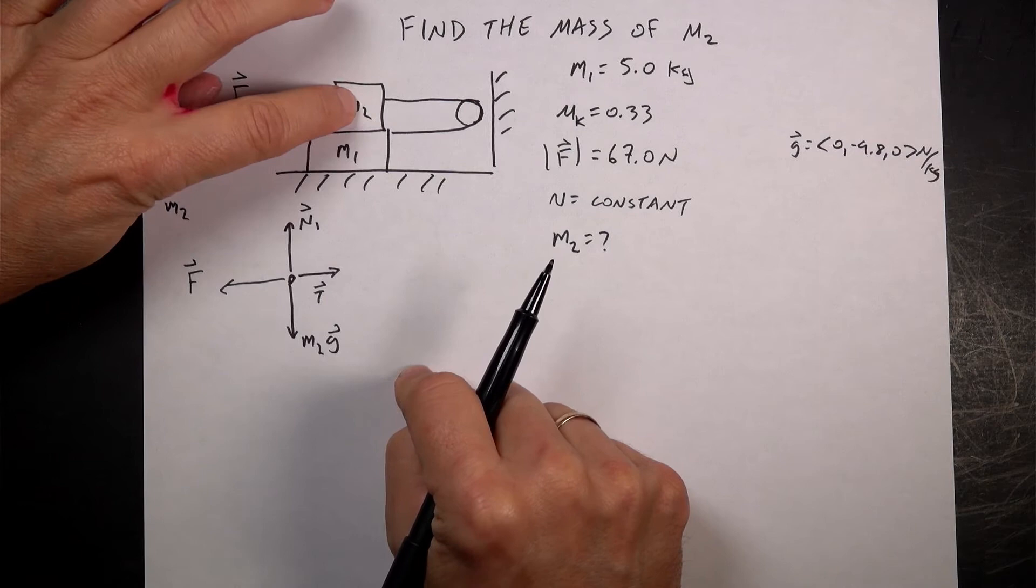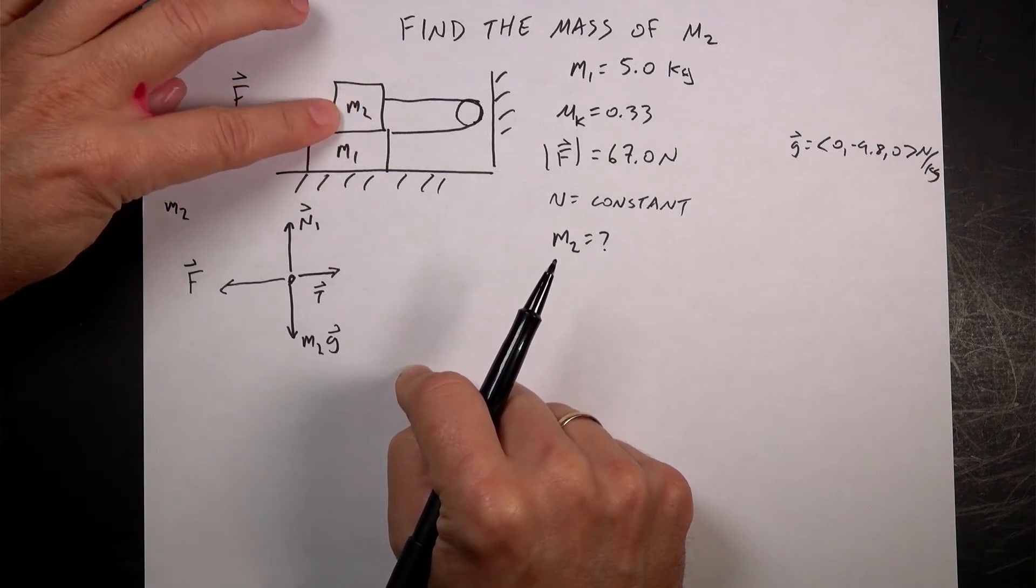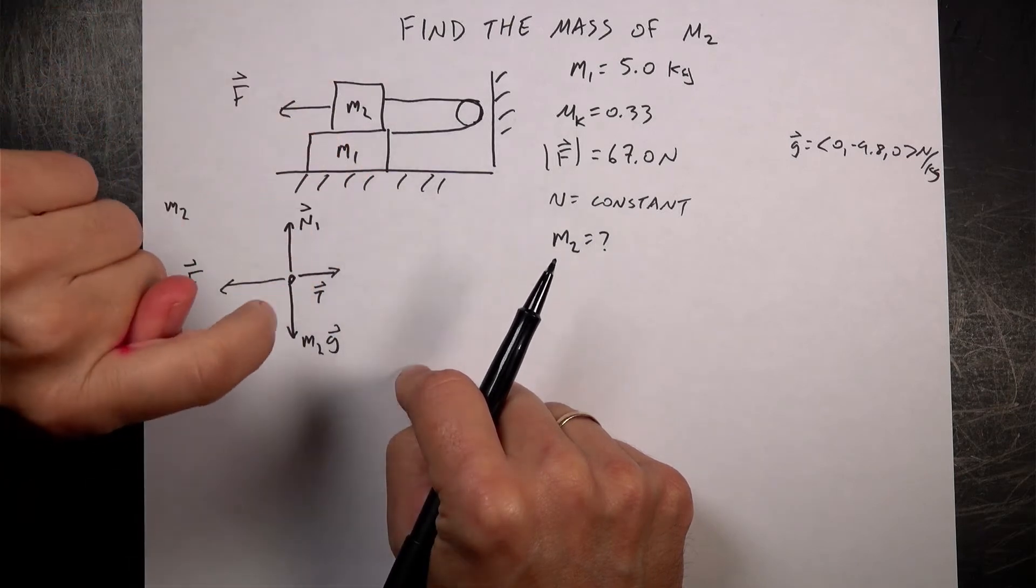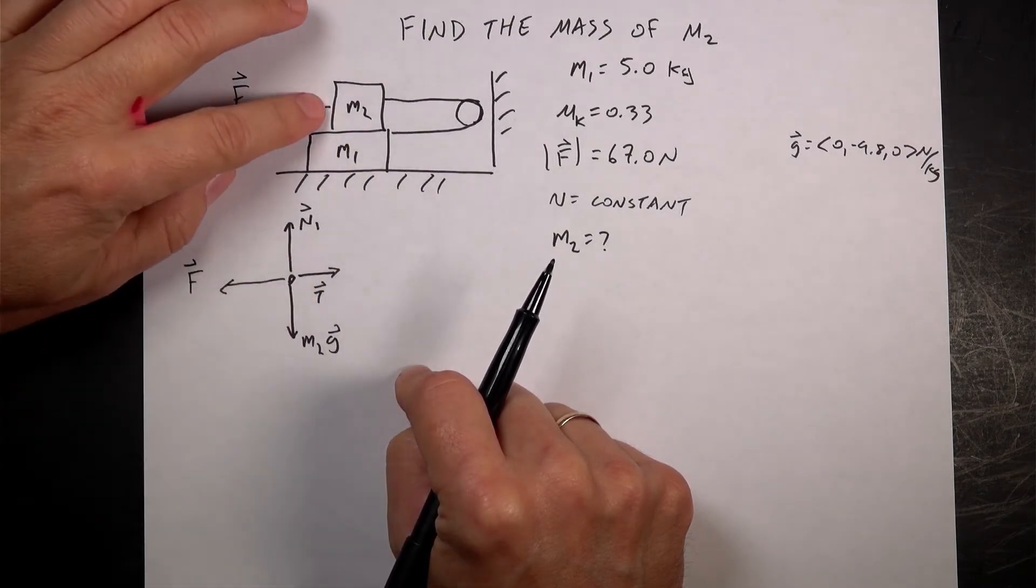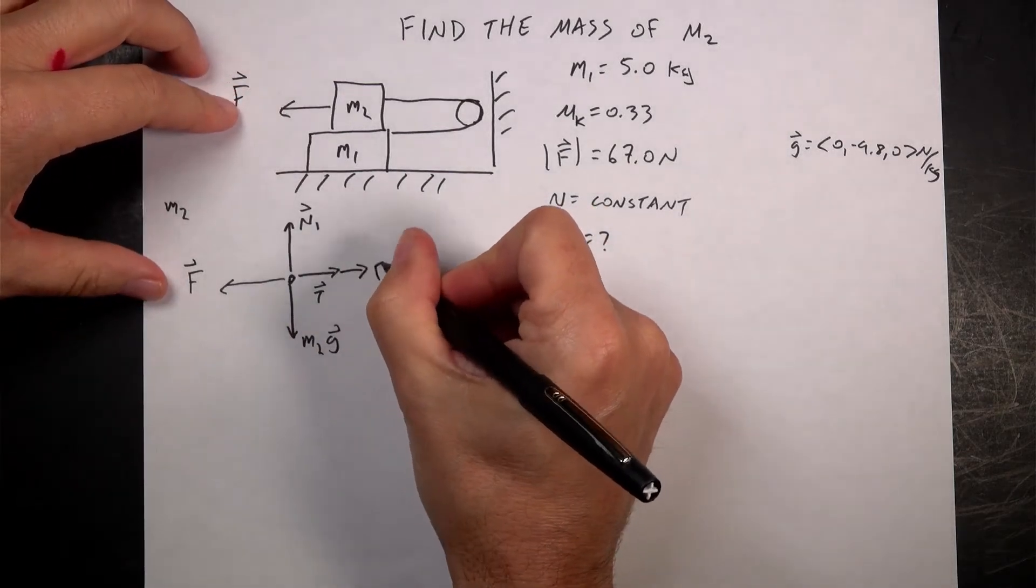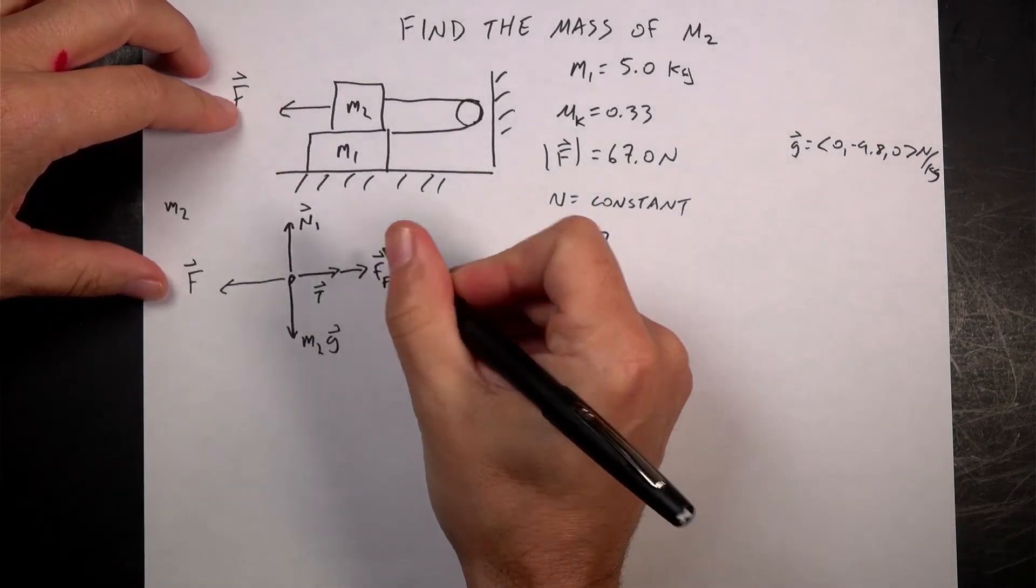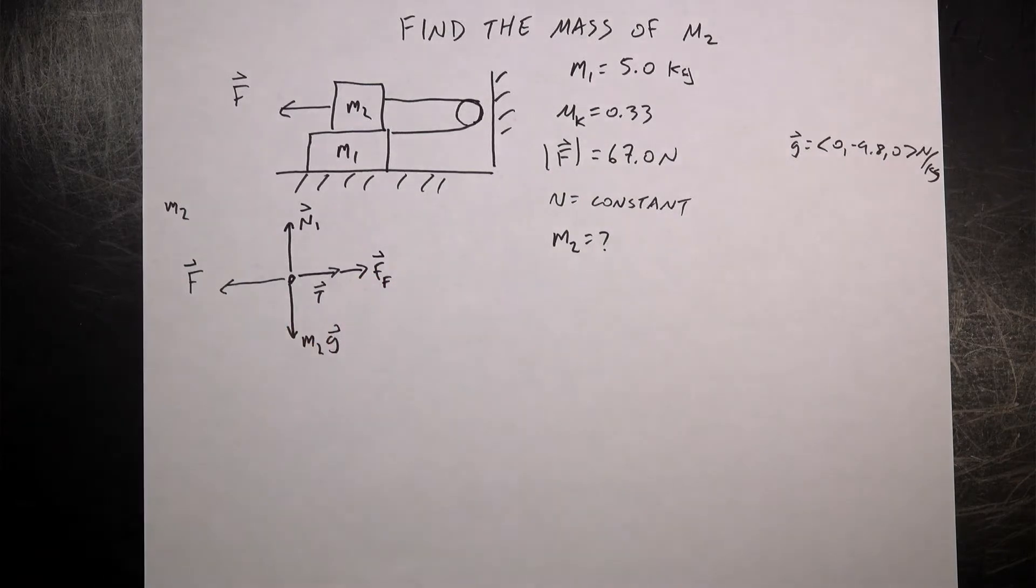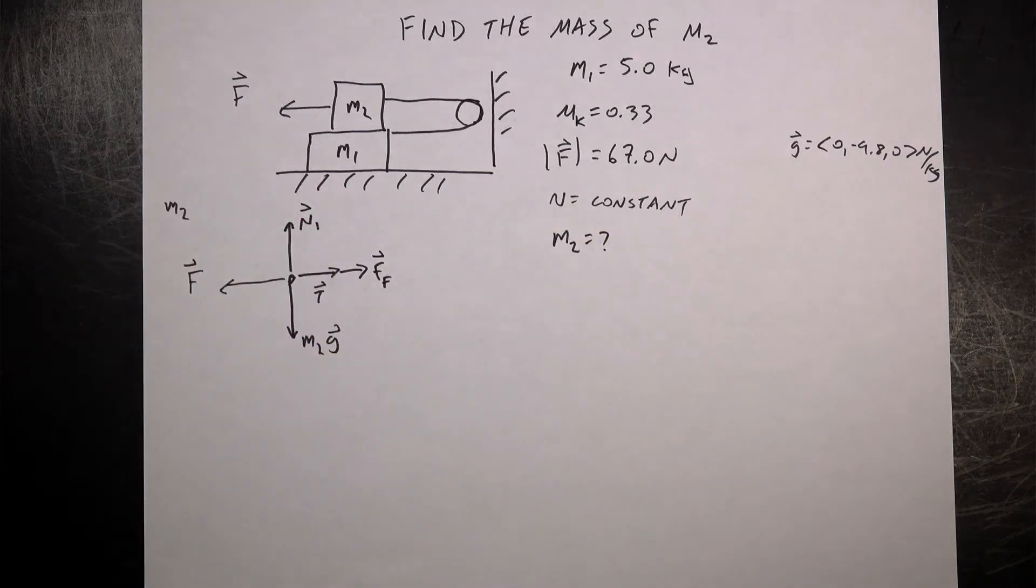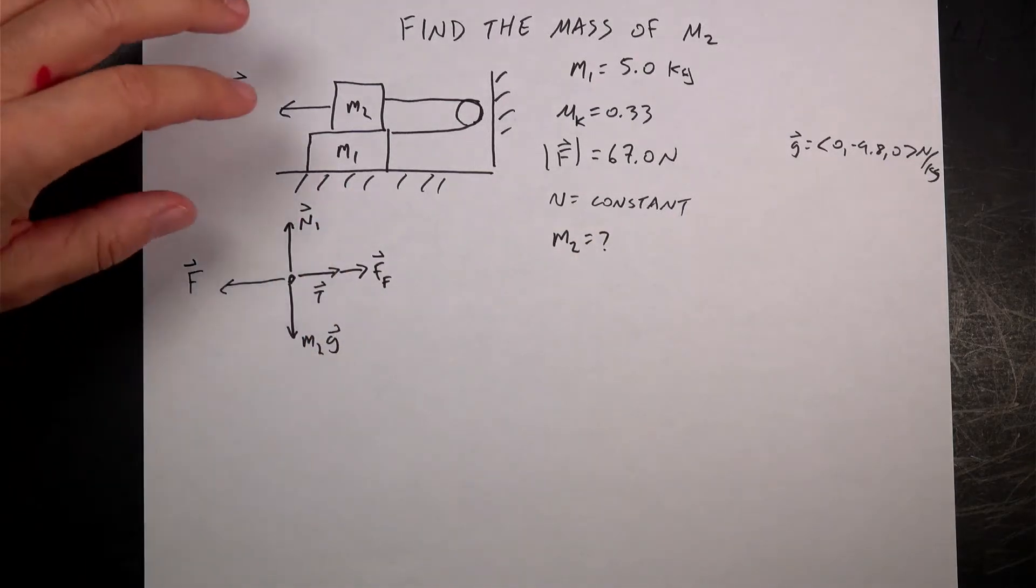So if this is sliding this way, the kinetic friction force is always in the opposite direction of the motion of the object. So that means that the friction force will be this way. I'm going to add it on right there, F friction. And now one of the important things is that since this is at a constant velocity, that means the net force has to be zero and the acceleration has to be zero.